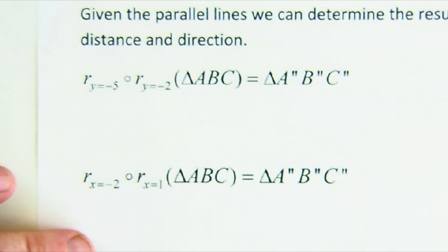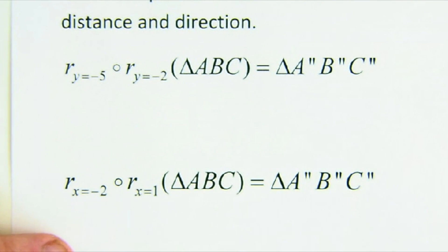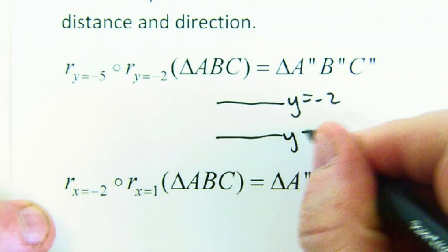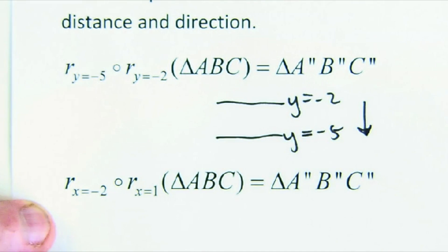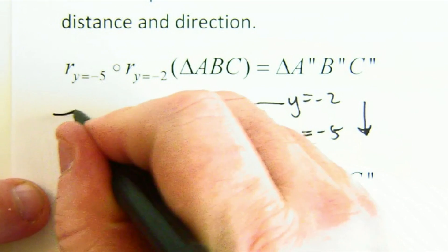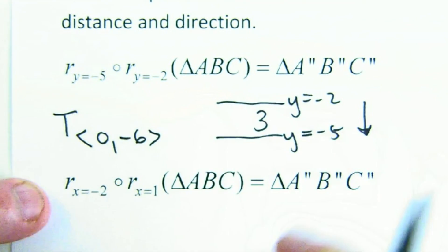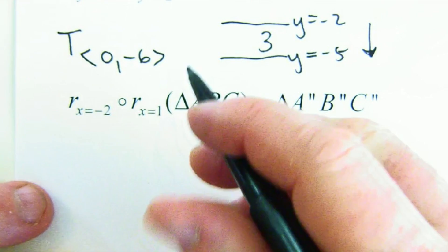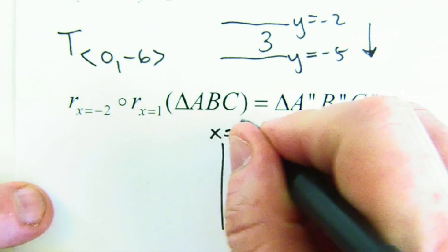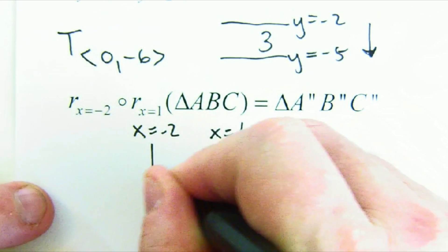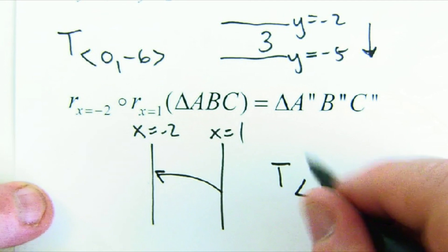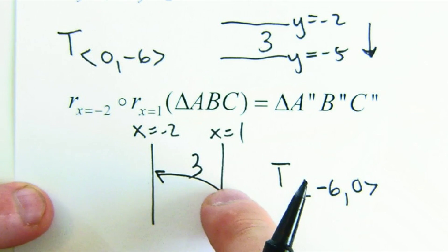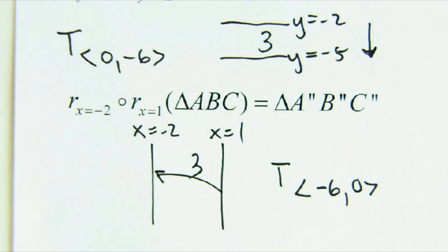Here's how I handle these final examples. Lines y equals negative two and y equals negative five: distance of three, heading downward, so the result is down six. For lines x equals one and x equals negative two: distance of three, going from one heading toward negative two means going left, so the resultant translation is six to the left. That's double reflections over parallel lines.